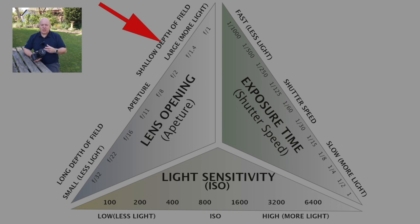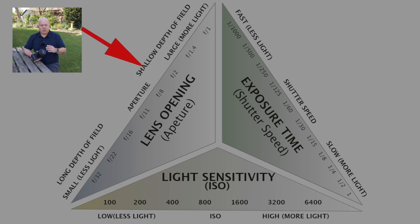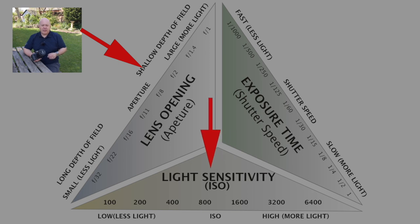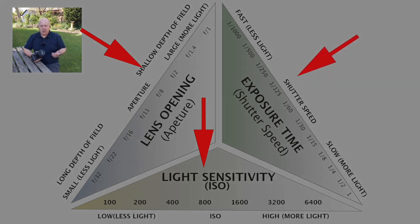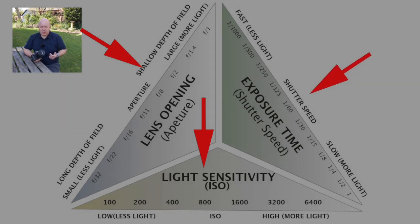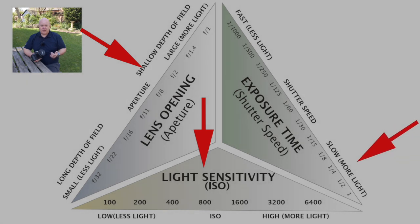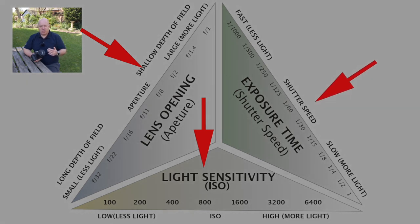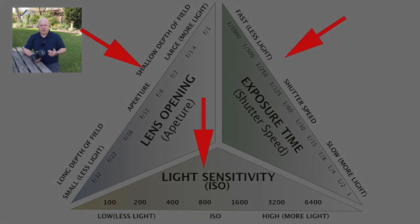Let's set an aperture of say f5.6, which is a fairly wide hole in your lens. Let's set an ISO of say 800. And then let's have a little play with the shutter. Now if we move the shutter up and down, you can see the faster we set the shutter speed, the darker it goes. And then the slower we set the shutter speed, the lighter it goes. So let's set the shutter speed somewhere in the middle — let's try one two-hundredth and fiftieth of a second.